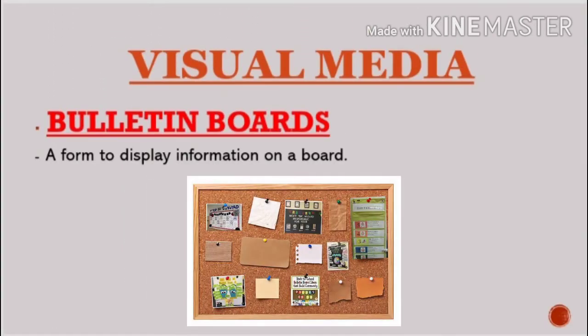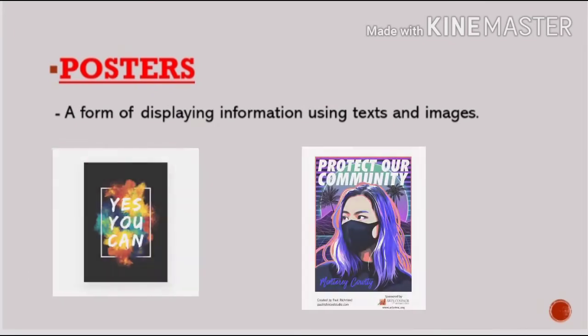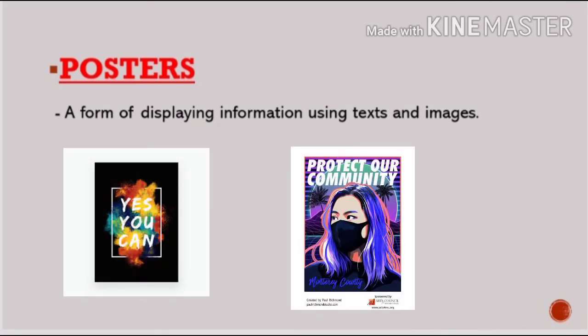The second type of audiovisual materials is visual media. Under visual media is bulletin boards — a form to display information on a board where notices and public messages are displayed so that people will be able to know the current activities and understand them. Next is posters, a form of displaying information which uses images and text that can be used in decoration or advertisement.